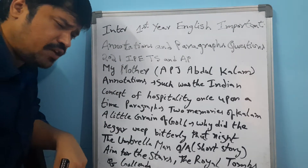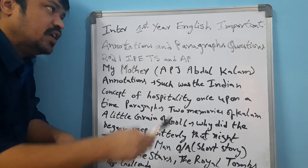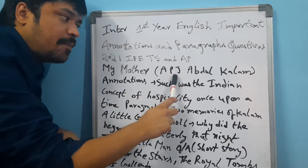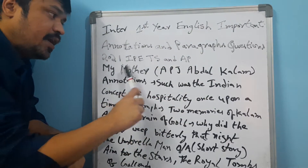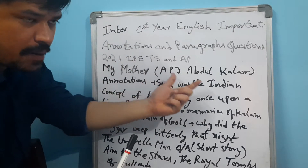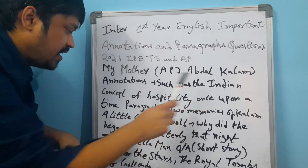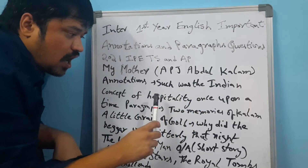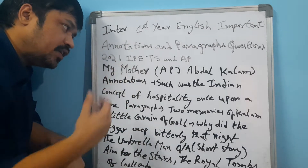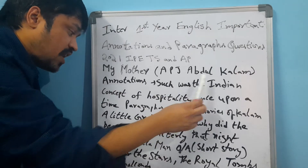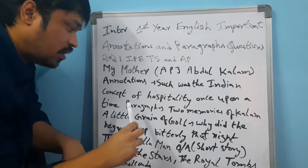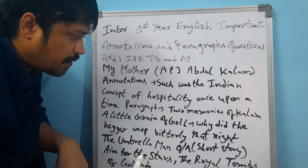Now let us discuss some important annotations and paragraphs regarding Intermediate First Year English paper. The first is 'My Mother' by APJ Abdul Kalam. The annotation regarding 'My Mother' by APJ Abdul Kalam is: 'Such was the Indian concept of hospitality once upon a time.'